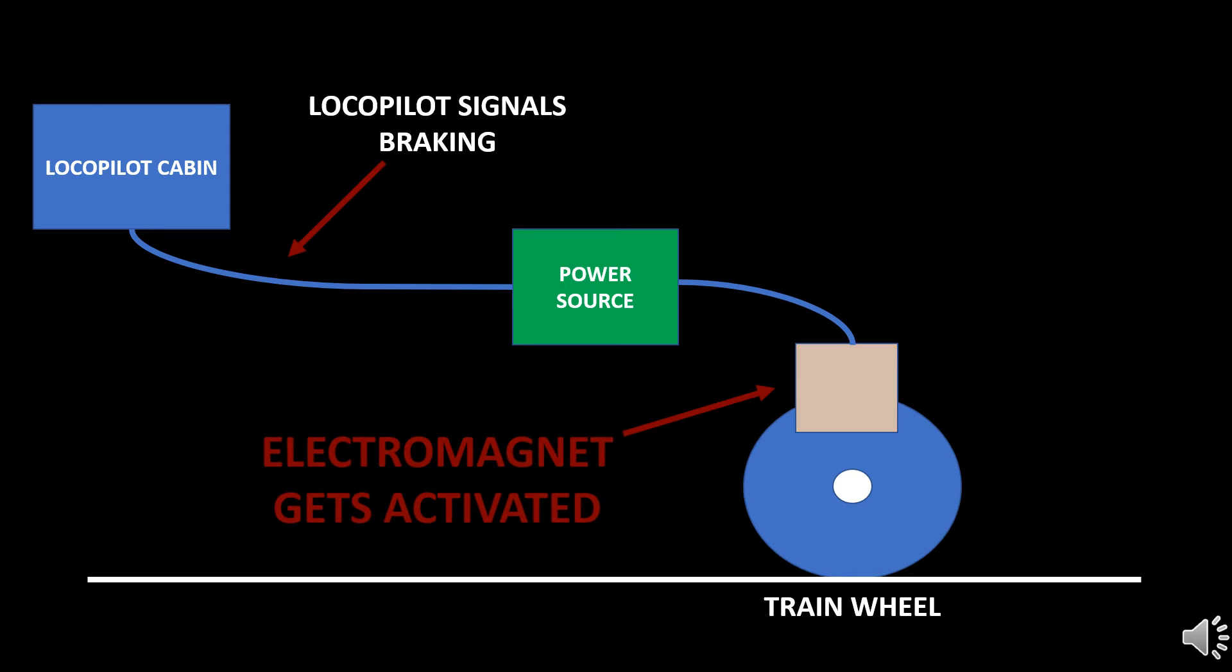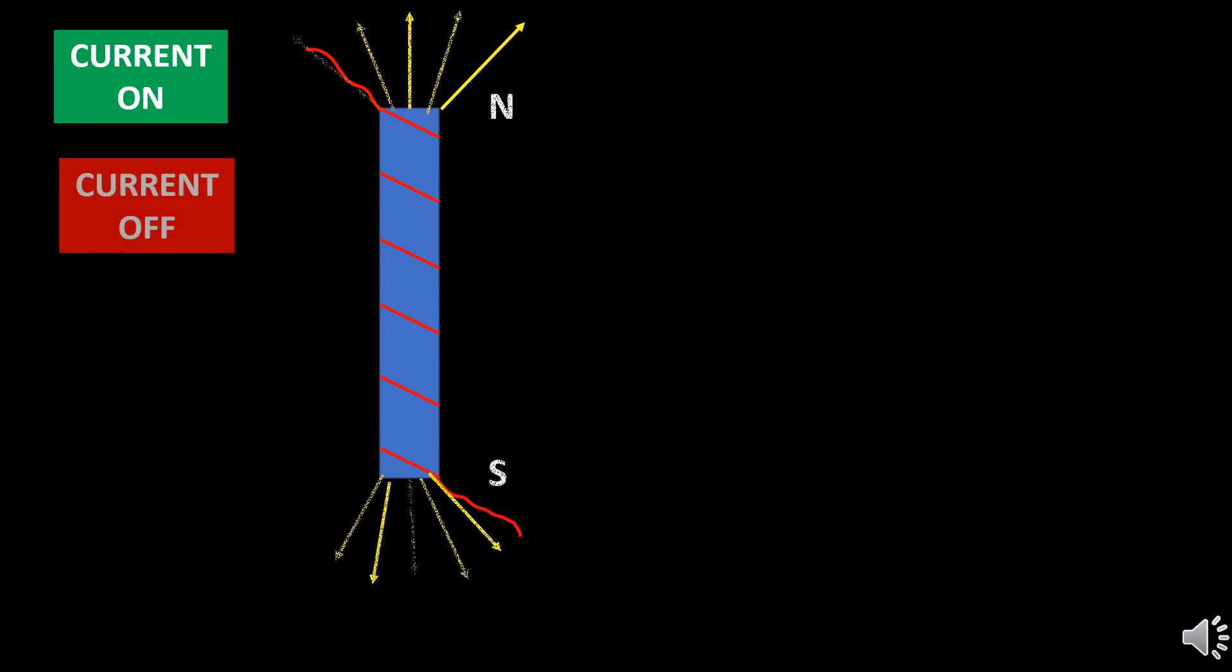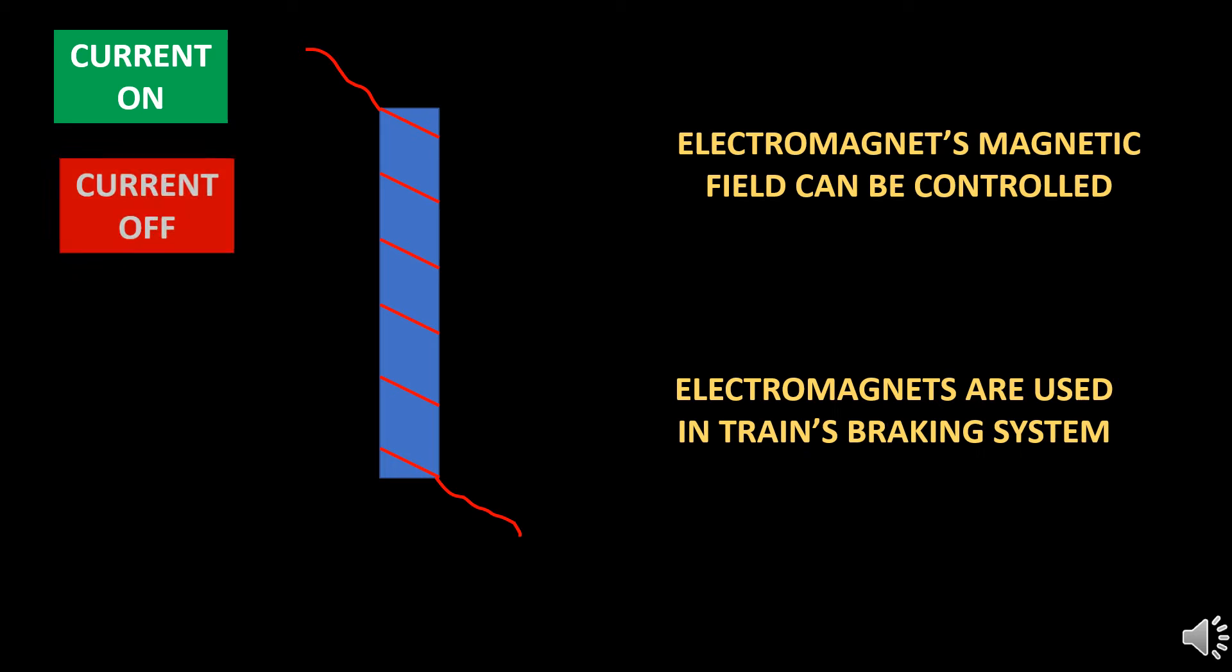An electromagnet consists of coil of wires which generates magnetic field, means acts like a magnet when electric current is passed through the coil. When the current in the coil is turned off, the electromagnet becomes demagnetized.